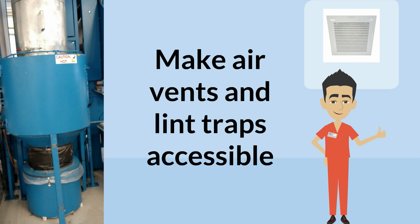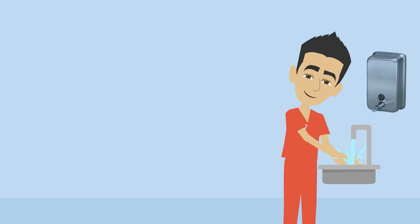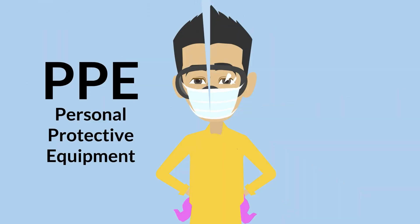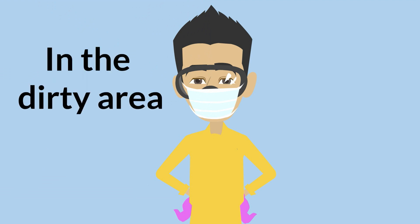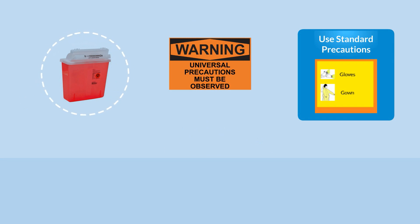Ensure that air vents are accessible to laundry workers so that lint can be easily removed. Hand hygiene stations should be conveniently located in the work areas, lounges, and restrooms. Provide personal protective equipment, including disposable gloves, gowns, and eye and face protection in the dirty area of the laundering facility to wear when handling soiled linen. Place approved sharps containers at the soil sort and washing point in case a sharp item is found with contaminated items.